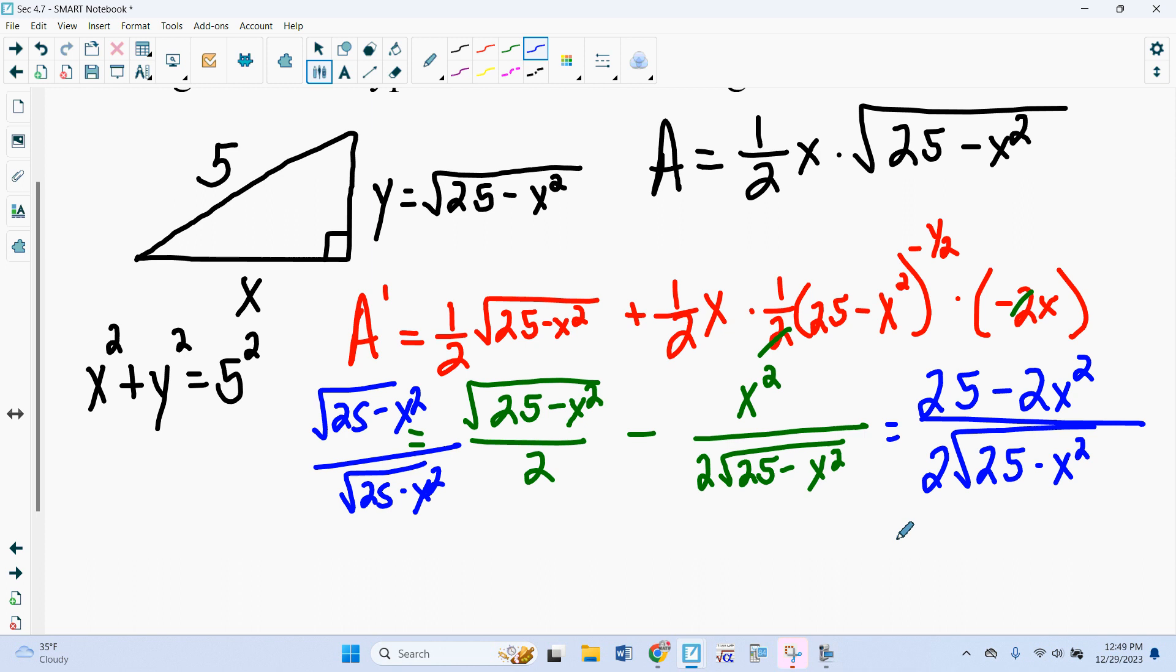So my critical points, I have a couple. What makes the bottom 0 or undefined is 5. And once again, it would be plus or minus 5. And then what makes the top undefined is plus or minus square root of 12.5. Now, in this situation, because we are looking at the sides and lengths of a triangle, I do not need to worry about the negative case. Everything's got to be positive. And secondly, I don't really have to worry about 5. If I put 5 in to here, if this side was 5, that side is 0, which is not really a triangle. So really, I only have one critical point.